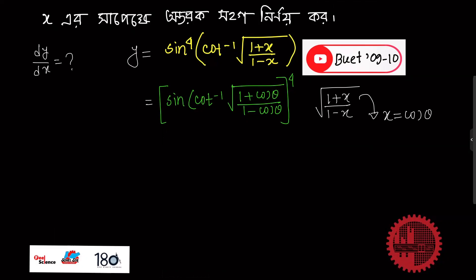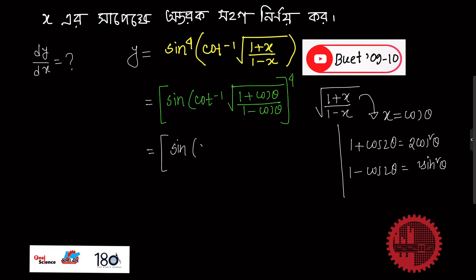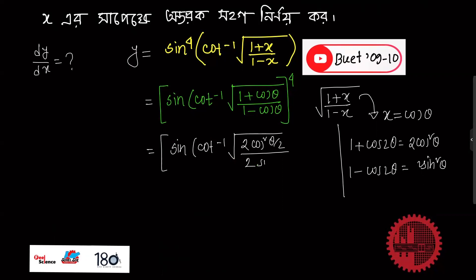We have 1 plus cos 2theta. 1 plus cos 2theta is 2 cos squared theta, and 1 minus cos 2theta is 2 sin squared theta.